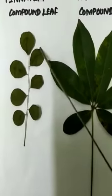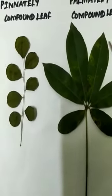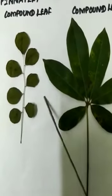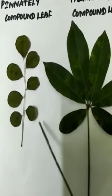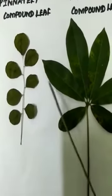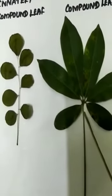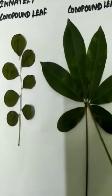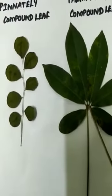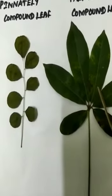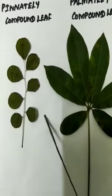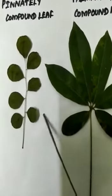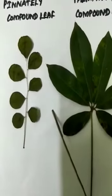There are types of compound leaves: one is pinnately compound leaf and another one is palmately compound leaf. In a pinnately compound leaf, leaflets are found on each side of the rachis. But in a palmately compound leaf, leaflets arise from a common point — it looks like a palm shape. One more term: a leaflet is also known as a pinna.